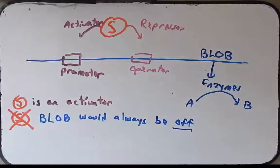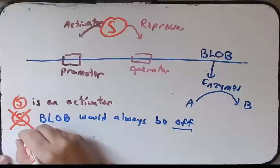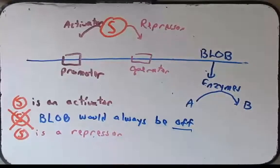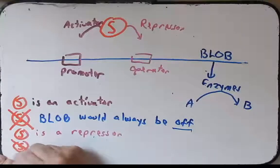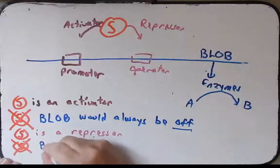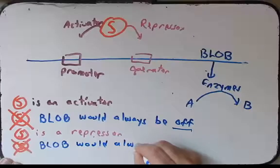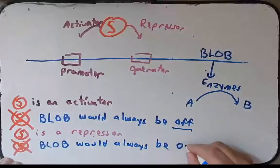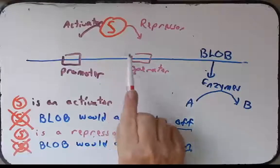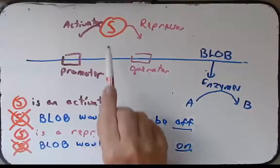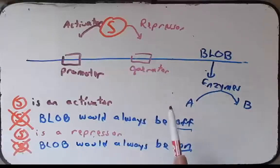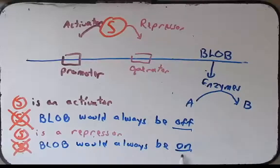Likewise, if S is a repressor, then if we mutate S, we would make the prediction that the blob operon would always be on. So why is that? Well, let's think about that. If S is a repressor and it's necessary to repress transcription of the blob operon, if we remove the S, then the ability to repress this operon is now removed, so the operon will now always be on.